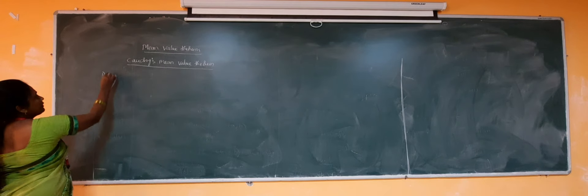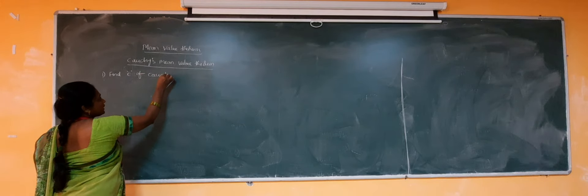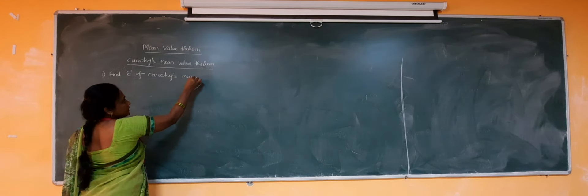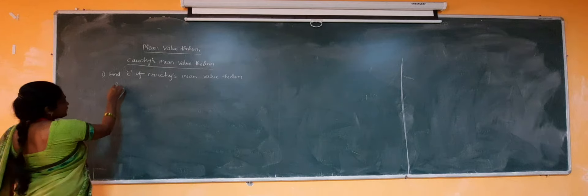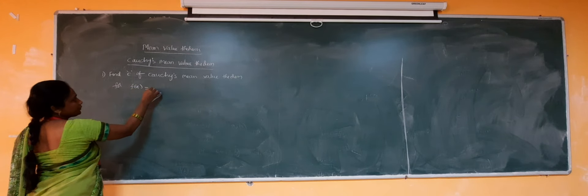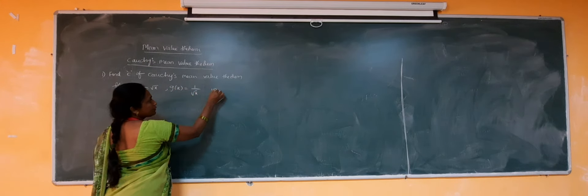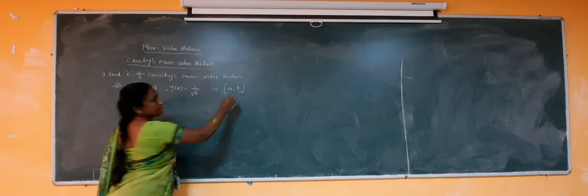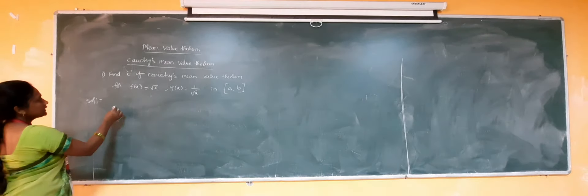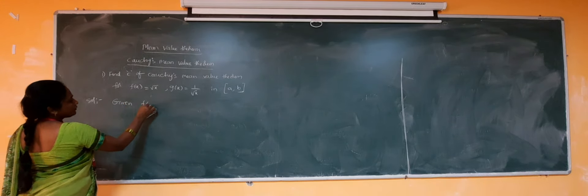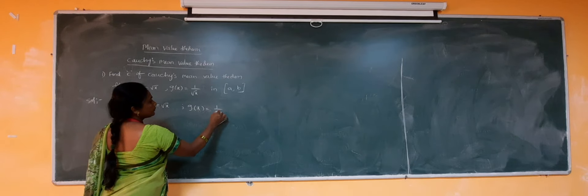Problem number one: Find C of Cauchy's Mean Value Theorem for the functions F(x) = √x and G(x) = 1/√x on closed interval [A, B]. Solution: The given functions are F(x) = √x and G(x) = 1/√x.